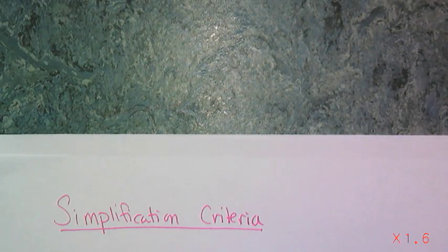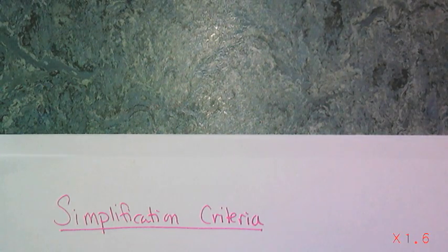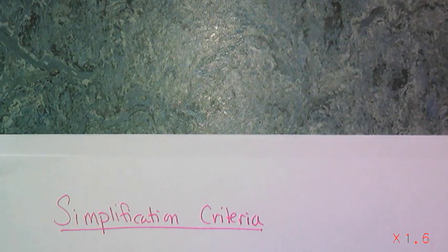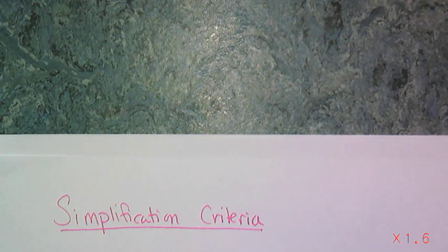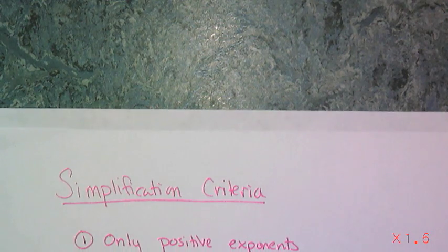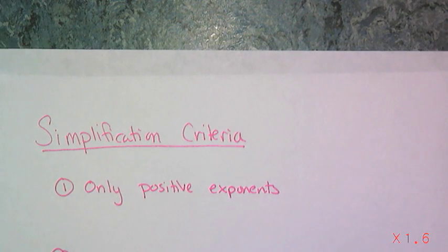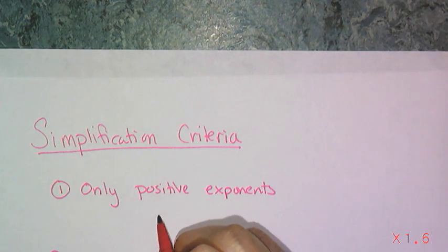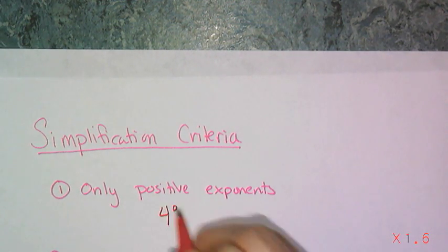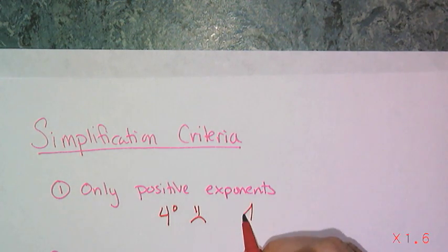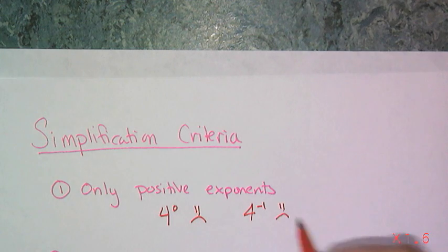Now let's look at the additional criteria you need to have simplified exponential expressions. So those criteria I have on the wall. So first one is you can only have positive exponents. No negative exponents, no exponents of 0. So something like 4 to the 0 power is a big frowny face. And something like 4 to the negative 1 power is also a big frowny face.